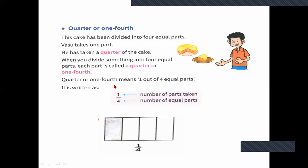One fourth or quarter is represented as one by four. One is nothing but the number of parts taken — he had taken one part out of four. So it is one by four. Each part is called as one by four in fraction. See here — in a paper they have divided into four equal parts and one part is shaded. The fraction for this shaded part is one by four, or you can also say quarter.